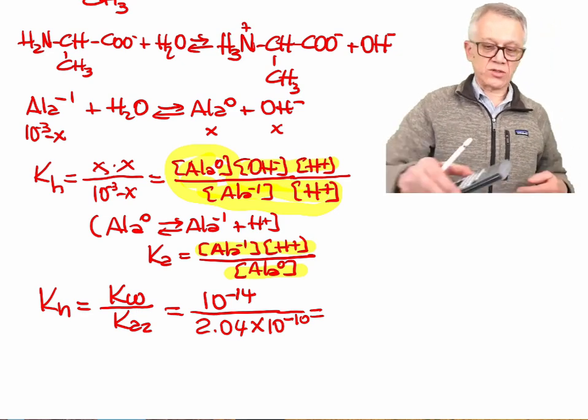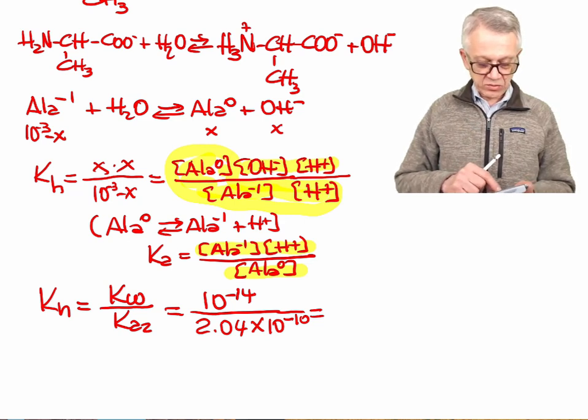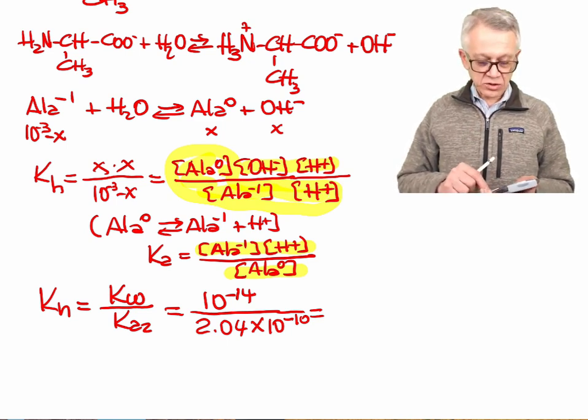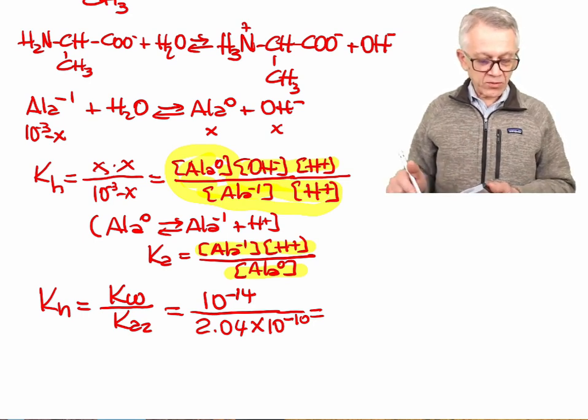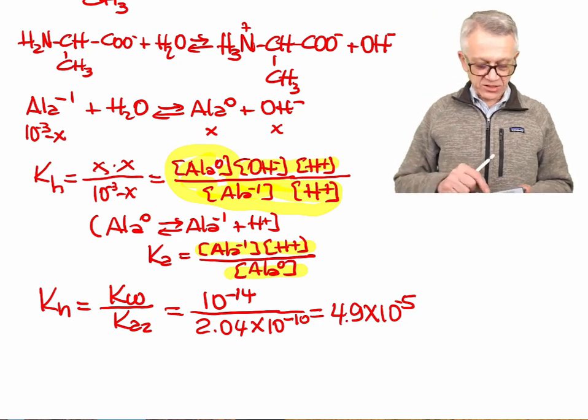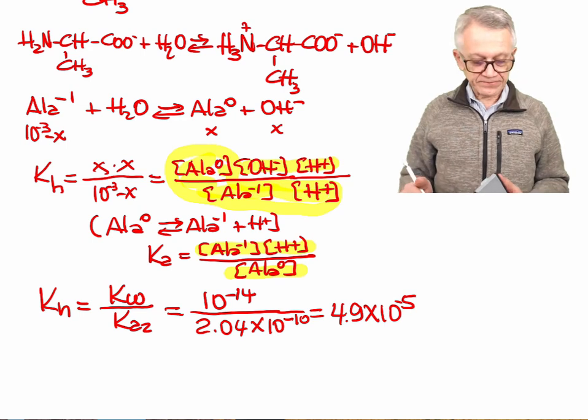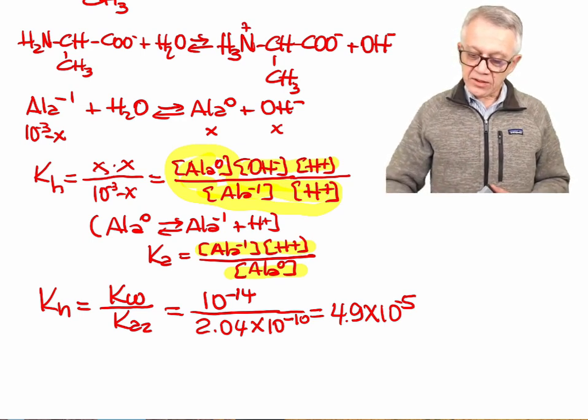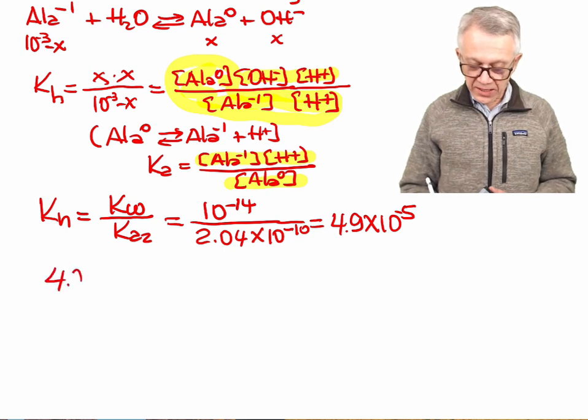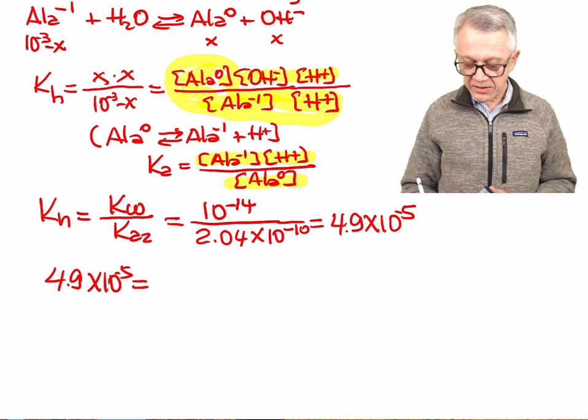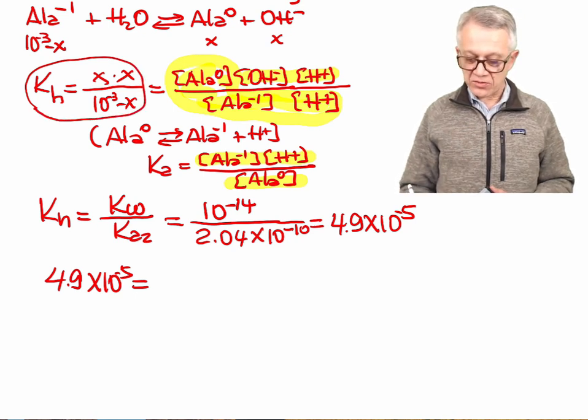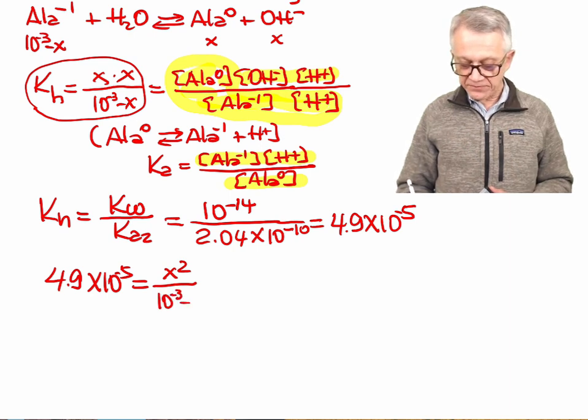So if you calculate that thing there, let's see what we get. 1 exponential 14, 2.04 exponential 10, change sign, equals 4.9 times 10 to the negative 5. And then we have now 4.9 times 10 to the power of negative 5 equals, from the Ka of this equation, it's going to be x squared over 10 to minus 3 minus x.